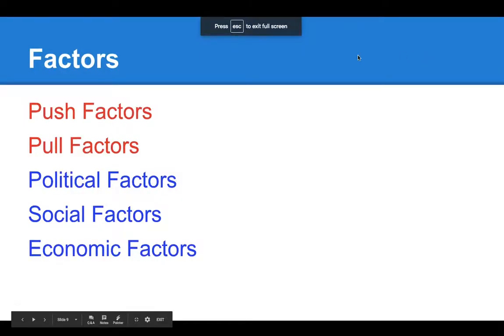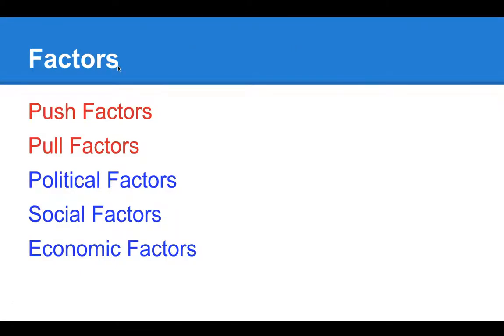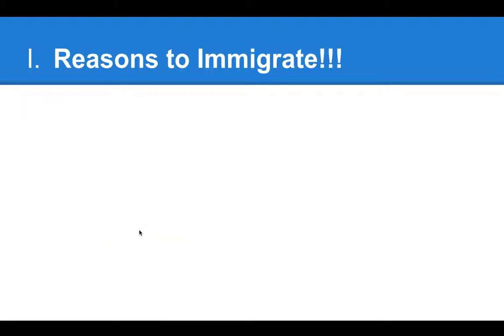The purpose of this screencast is to talk about factors. These will be in play all year long. We'll be talking about push and pull factors — those factors that brought people to the colonies and later to the United States. I'll be defining these and giving examples. Political, social, and economic factors are ways to organize your notes; they're categories in which to put the ideas you come across in readings or lectures.